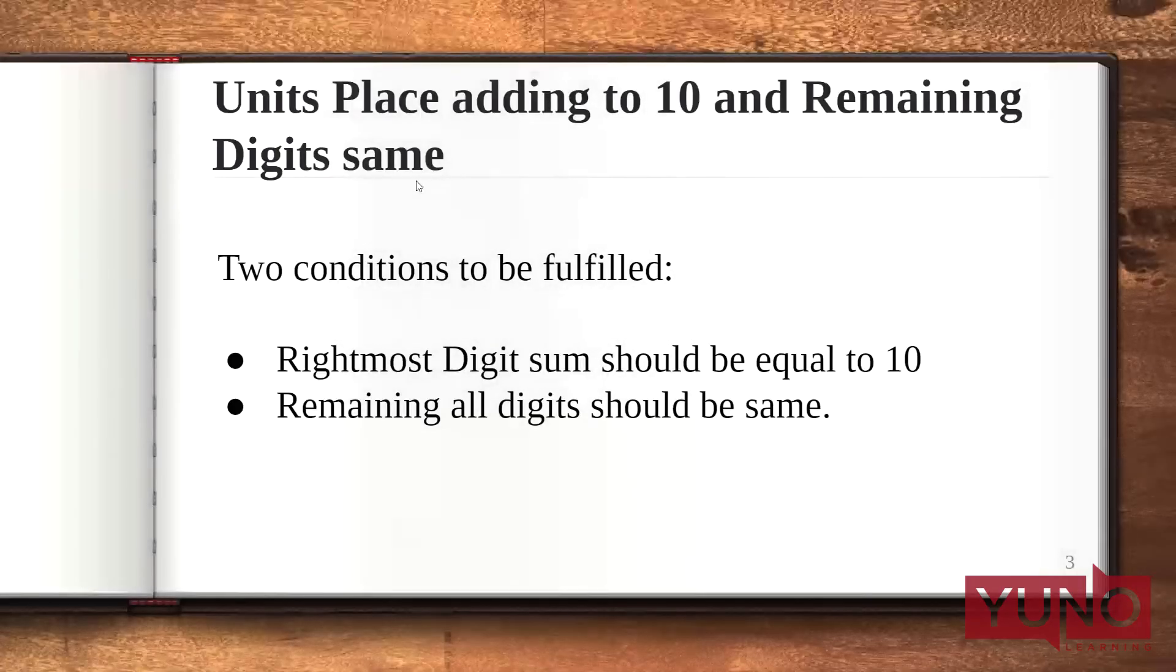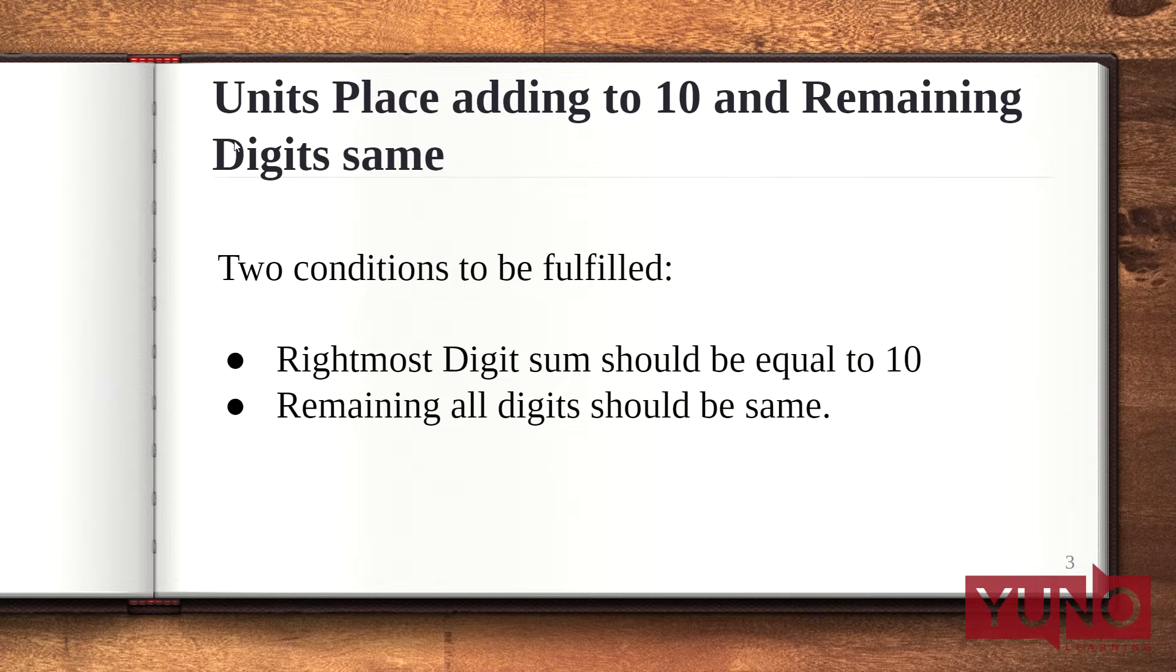Let us discuss the first method, the first variation that is units place adding to 10 and remaining digits same. Here two conditions need to be fulfilled. The first that in the multiplicand and the multiplier, the rightmost digits sum should be equal to 10 and all the remaining digits should be same.